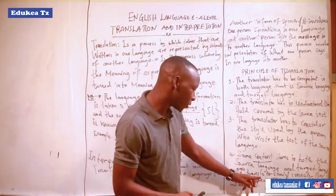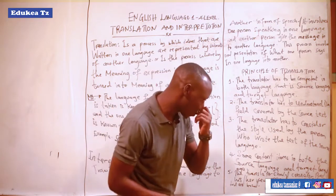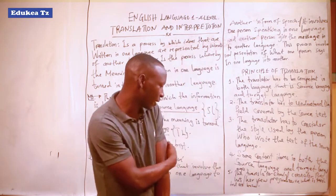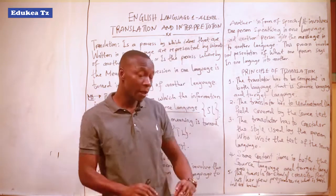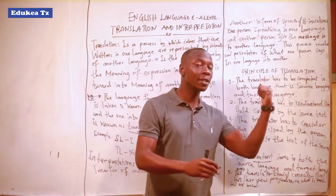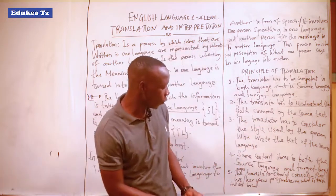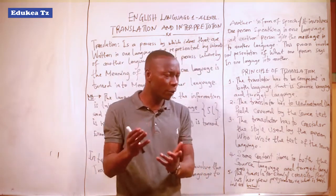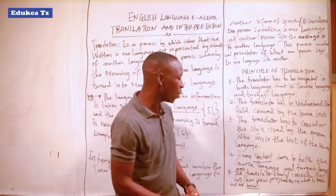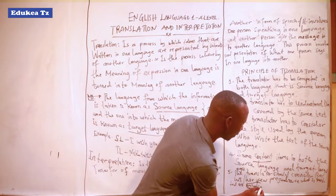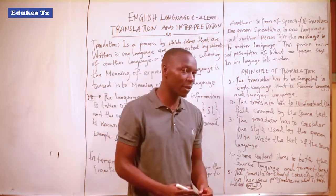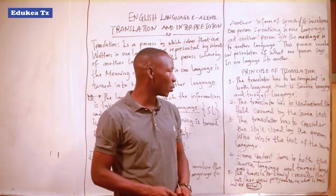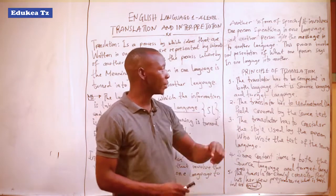The fifth principle: the translator should consider his or her views, prejudice, and biases in what is translated. The translator should consider what has been spoken by the speaker. If the translator discovers that the speaker has used biased language, the translator should be careful to avoid translating those words in a way that bores or offends the majority of the audience.